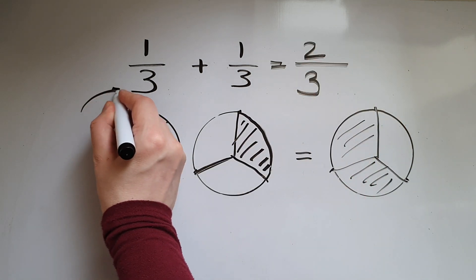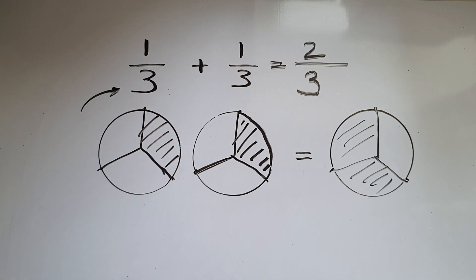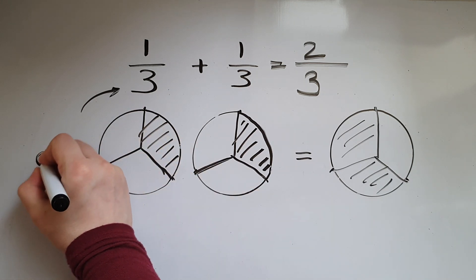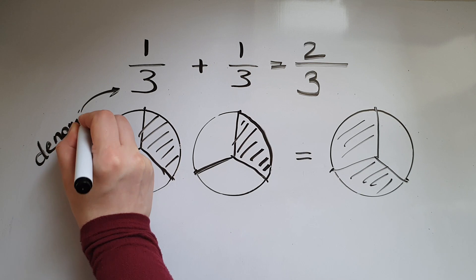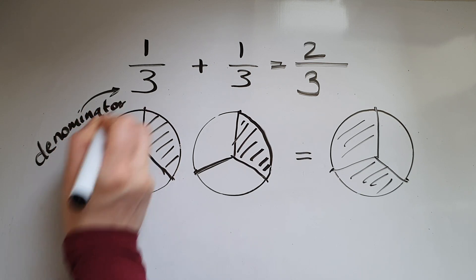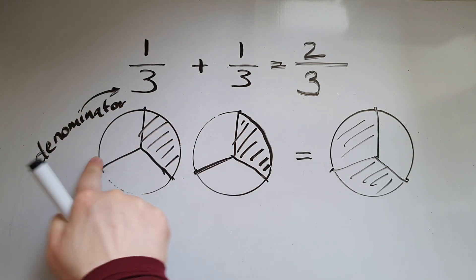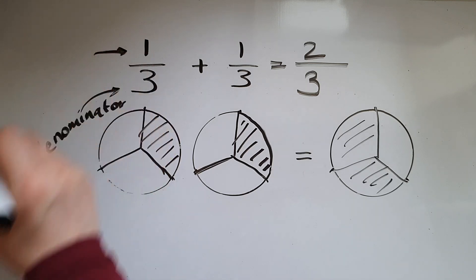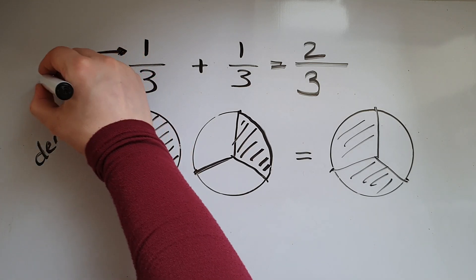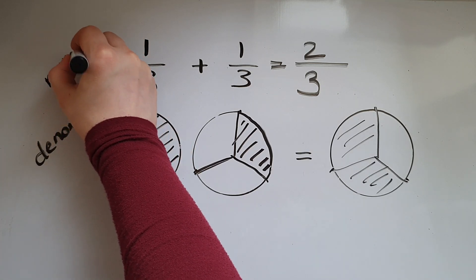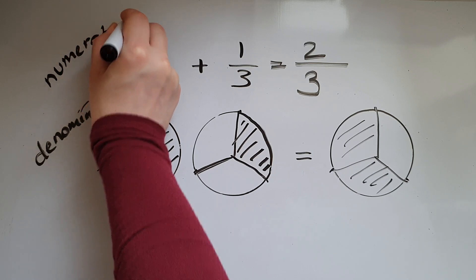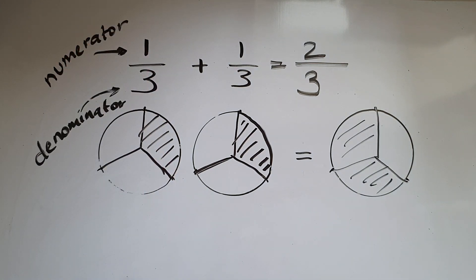By the way, this number at the bottom is called denominator. Down, denominator. And this number at the top is called numerator. So having the same denominator makes it very easy to add fractions.